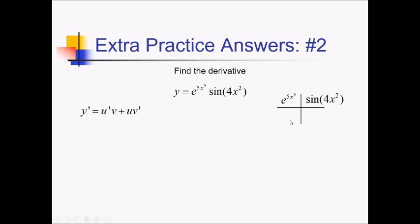And now the derivatives — this is e to the something, so it's a chain rule. The derivative of that is going to be e to the 5x to the 5th, times the derivative of 5x to the 5th, which is 25x to the 4th. And then over here I have another chain rule. This is sine of something, so the derivative is going to be cosine of 4x squared, times the derivative of 4x squared, which is 8x.